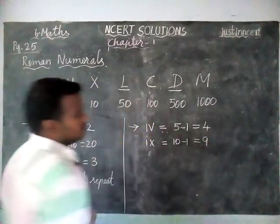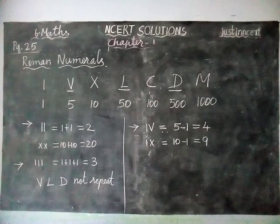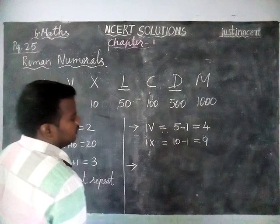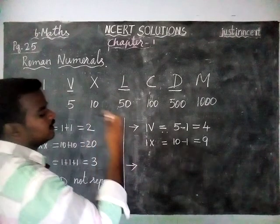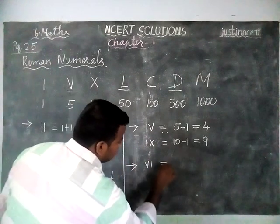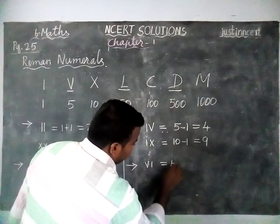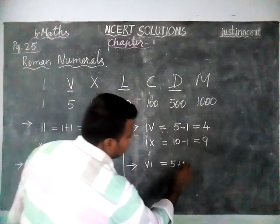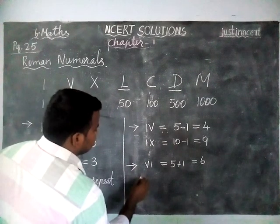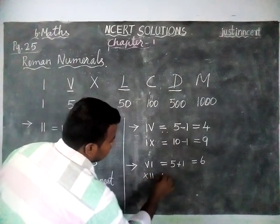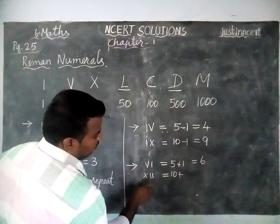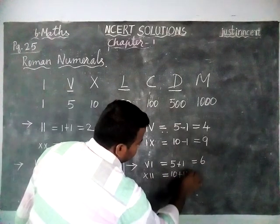And next: if I write a smaller value on the right-hand side — V, I — V value is 5 plus I value is equal to 1, which is equal to 6. Next example: X, I, I — X value is equal to 10 plus I value 1 plus 1 is equal to 12. Like this, we can write it.